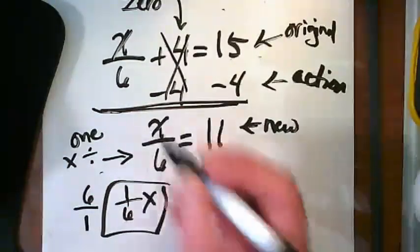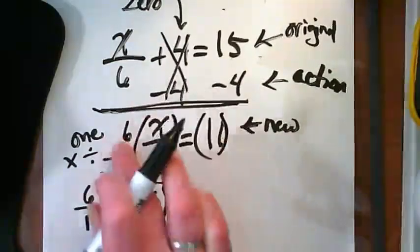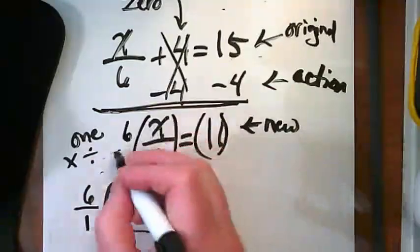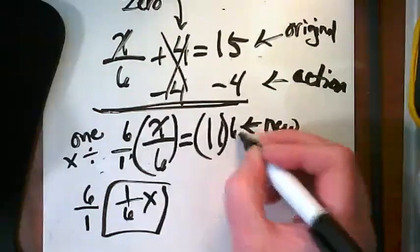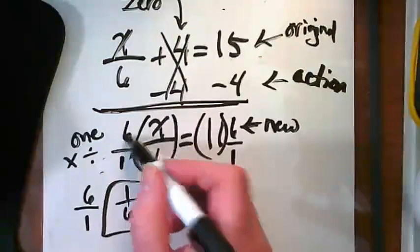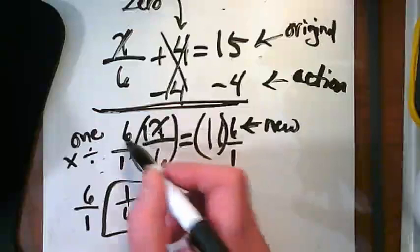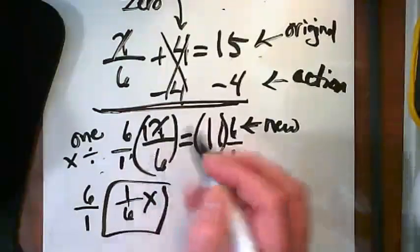6 over 1. So we're going to multiply both sides by 6 over 1. I get 6 times 1x, or 1x. 6 times 1x, and 1 times 6.